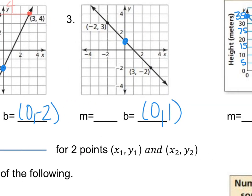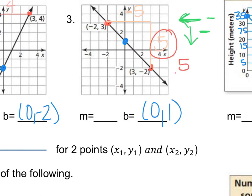For problem 3, I have a point here and a point here. My rise is 5 and my run is 5, but notice I went to the left. Going left is a negative direction, and going down is also negative. So my run is negative 5, giving a slope of positive 5 over negative 5, which equals negative 1.